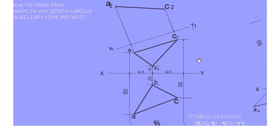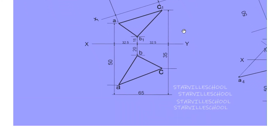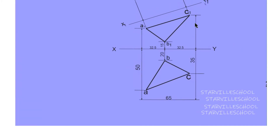Having done that, we now move on to the other side — C1D1... we also solve for this. Similarly, we are doing the same thing we did for the first side A1C1, and we are to draw parallel lines to side B1C1.